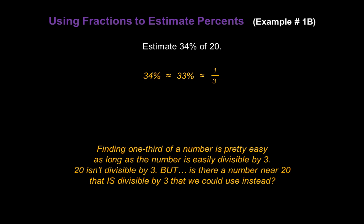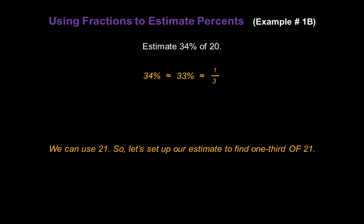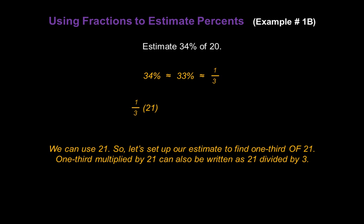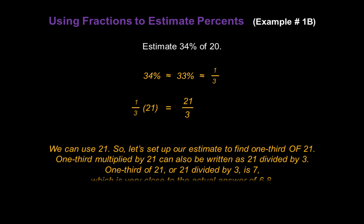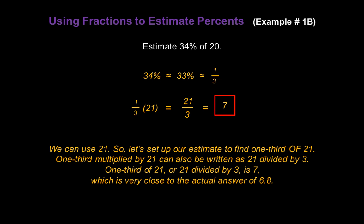Now 20 isn't divisible by 3, but is there a number near 20 that is divisible by 3 that we could use instead? In fact, we can use 21. So let's set up our estimate to find one third of 21. One third multiplied by 21 can also be written as 21 divided by 3. One third of 21, or 21 divided by 3, is 7, which is very close to our actual answer of 6.8.